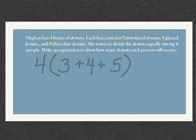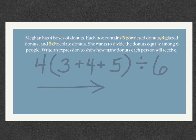Another step is to divide the donuts equally among six people, so I add a division sign and divide by six: 4(3 + 4 + 5) ÷ 6. Thinking about order of operations — this is just one term with no addition or subtraction sign outside the parentheses — so we do parentheses first, then multiplication and division left to right. This is exactly how we would write this expression.